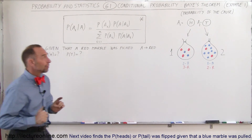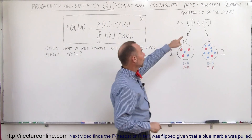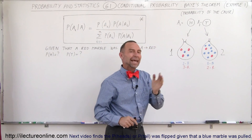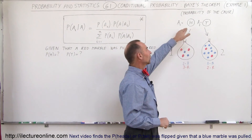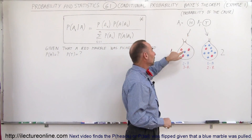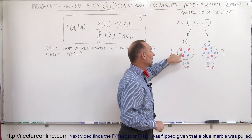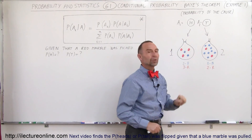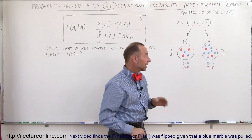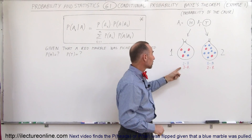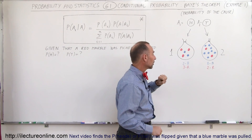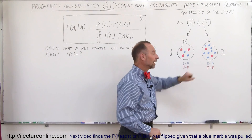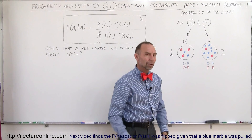So here we have a set of events. First we're going to toss a coin — it can either be heads or tails. If we toss heads, we'll grab a marble out of the left bag. If we toss tails, we'll grab a marble out of the right bag. In the left bag there are two blue marbles and three red marbles. In the right bag, bag number two, there are eight blue marbles and two red marbles.